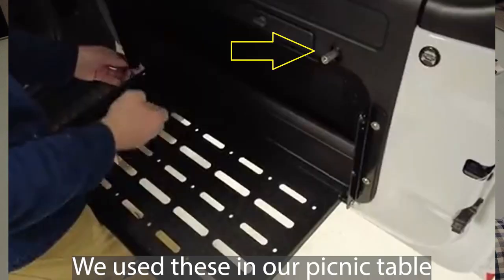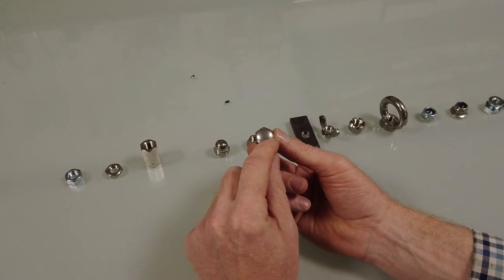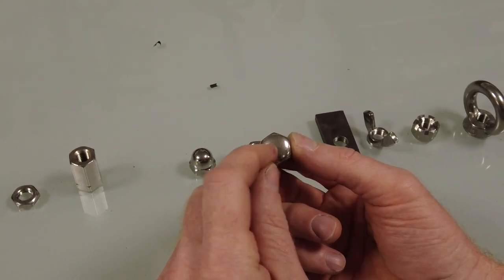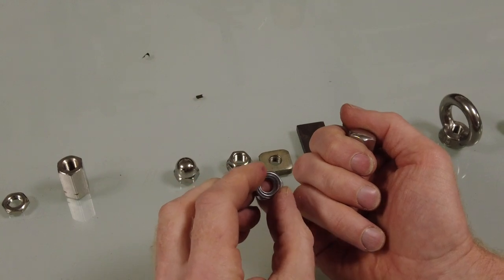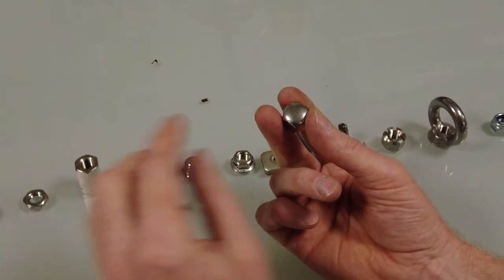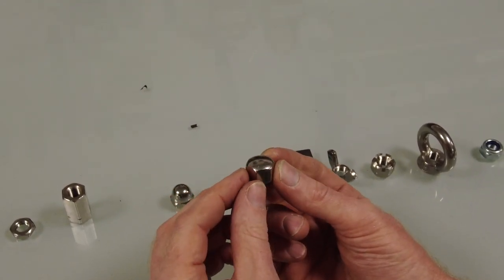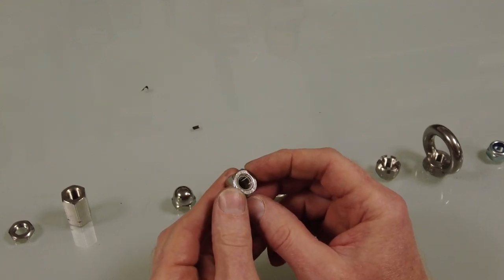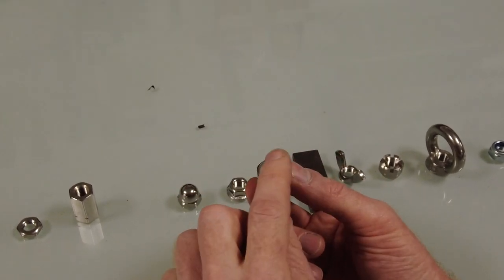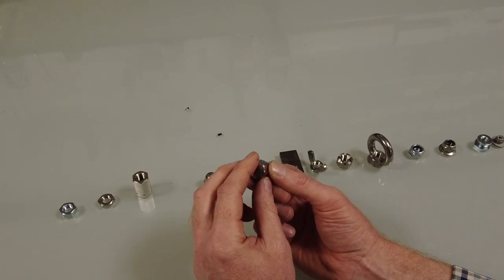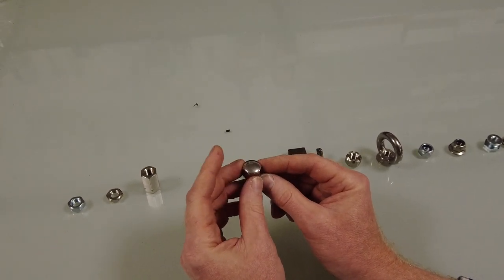Now if you don't want water getting in the end, because normally when you put a bolt through, water can get in the end, or if you want it to look nice, you could put a cap nut on your project. You can see that it's closed at the end so you don't see the bolt coming through, and that has its uses too.